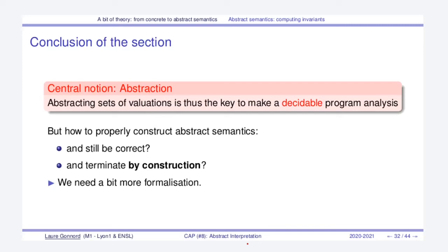So, from the concrete semantics we have defined an abstract semantics in terms of fixed points, and we have defined a new algorithm that enables us to propagate information in terms of abstract values. Abstracting sets of valuations is the key to defining such new decidable algorithms. However, at this point I haven't talked about how to properly construct this abstract semantics to guarantee correctness and that the fixed-point iteration terminates by construction. We need a bit more formalization, which will be done in the next video.